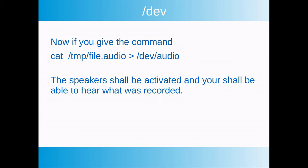To play back the recording you can run cat slash tmp slash file.audio and redirect the output into dev audio — now you are writing to the dev audio device and you can hear what was recorded from the speakers. This is an example of reading and writing files which actually activates different hardware devices.